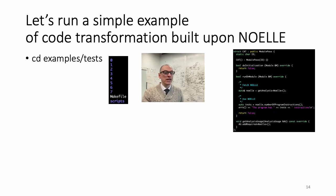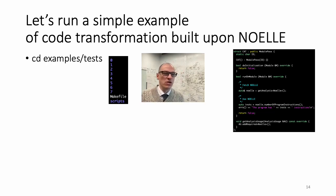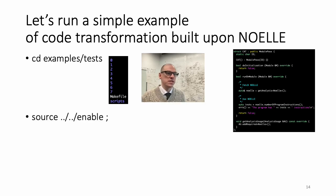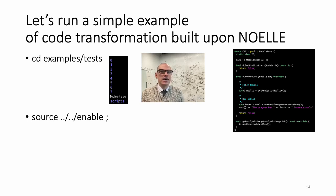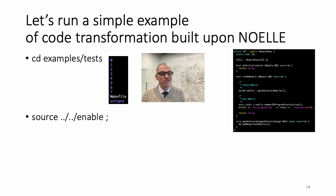Now that we've compiled it, we can run it. To run that pass, we apply it to an IR. That's why we have the subdirectory tests under examples — it has a few C and C++ programs. First you have to enable NOEL, meaning you need all the tools NOEL provides in your environment — for example, the binary noell-load in your path. When you compile NOEL, the compilation automatically generates a text file called enable, installed in the root of the NOEL Git repository. By sourcing that file, you have the whole NOEL infrastructure in your environment.